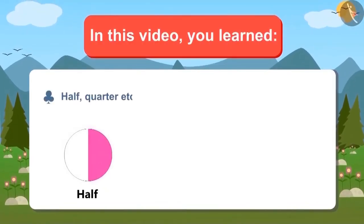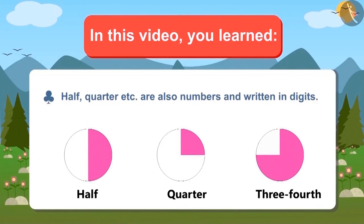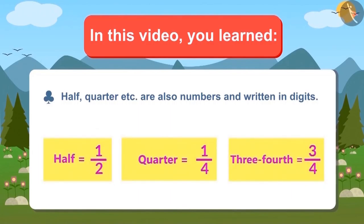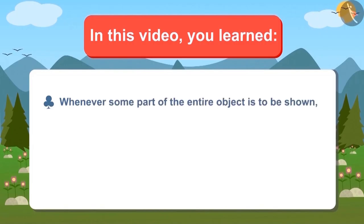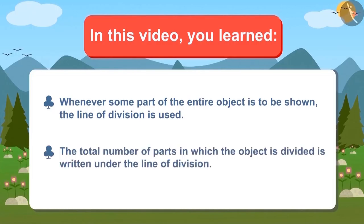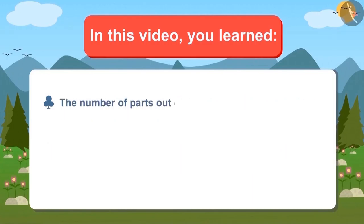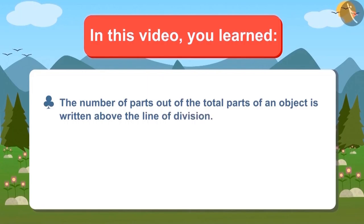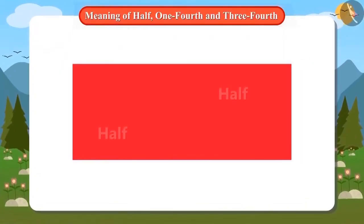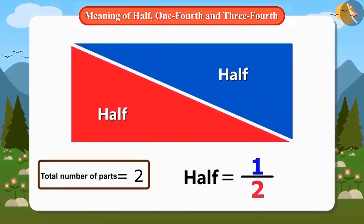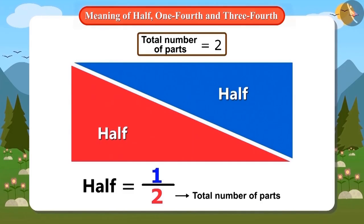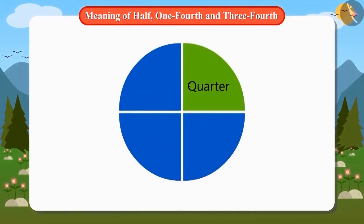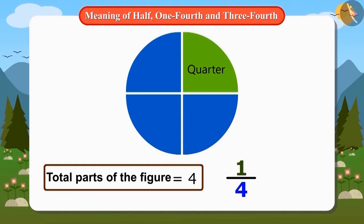In this video, we have learned that half, quarter, etc. are also numbers and they can be written in digits. Whenever some part of an entire object is to be shown, the line of division is used. The total number of parts into which the object is divided is written under the line, and the number of parts out of the total is written above the line. For example, to show half of an object, one by two is written, which means one part out of two. And one by four is written for one-fourth, which means one part of four.